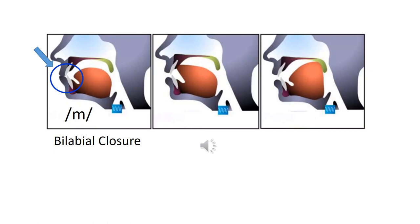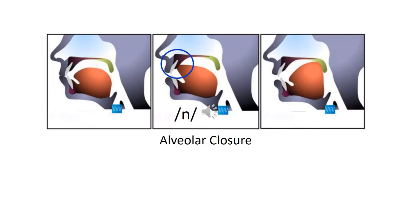Alveolar closure occurs when the tongue blade hits the alveolar ridge. This closure produces the nasal consonant n, as in no. It's related to the alveolar plosives t and d.